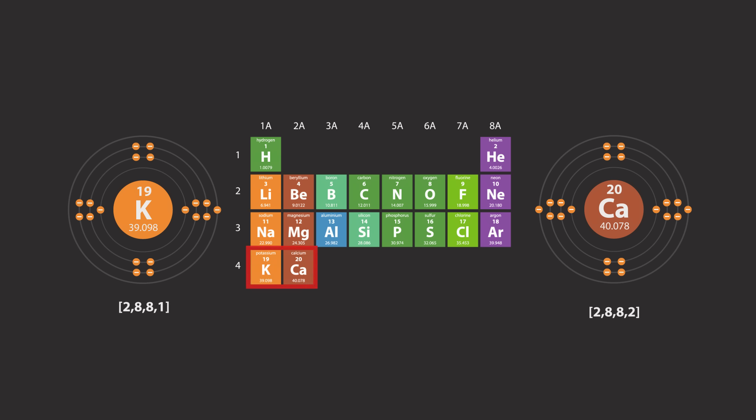For potassium and calcium, their respective valence electrons occupy the fourth electron shell.